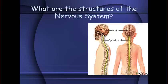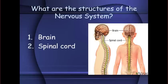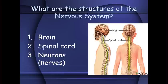Now let's move on to the structures of the nervous system. One of the primary structures is the brain, located in our skull. We also have the spinal cord, which runs from the brain down through the center of the back, and the neurons — also known as nerves. Those are the three primary structures: brain, spinal cord, and neurons.